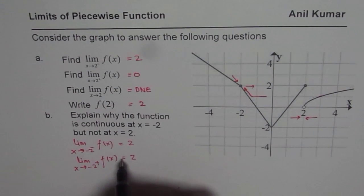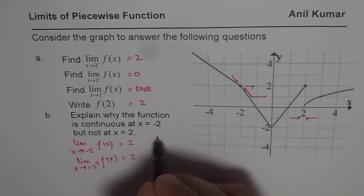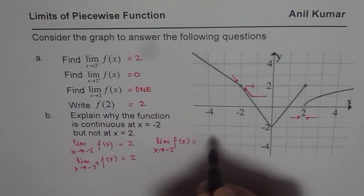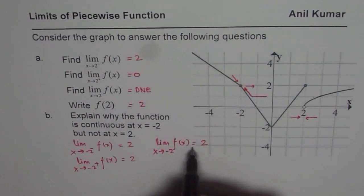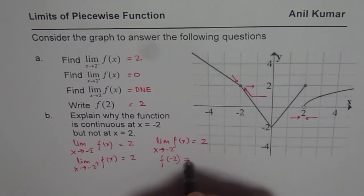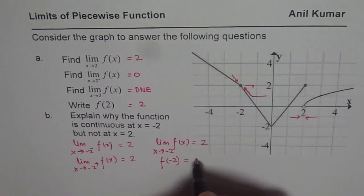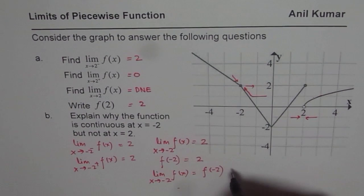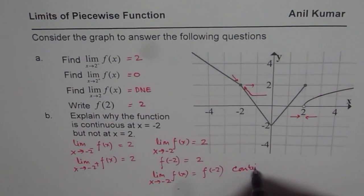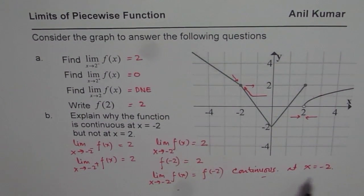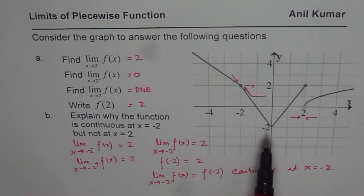Since these two limits are the same, the limit exists. The limit of the function as x approaches negative 2 is equal to 2. The first condition is that the limit should exist. The second condition is the value of the function at negative 2, which is also 2. Since the limit equals the function value at x equals negative 2, we say that the function is continuous at x equals negative 2.